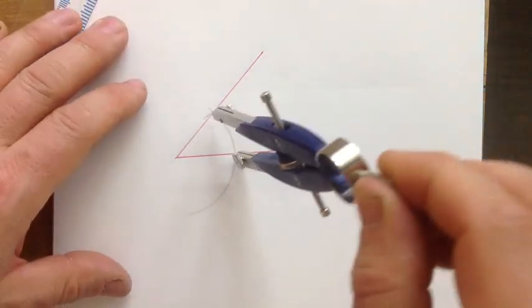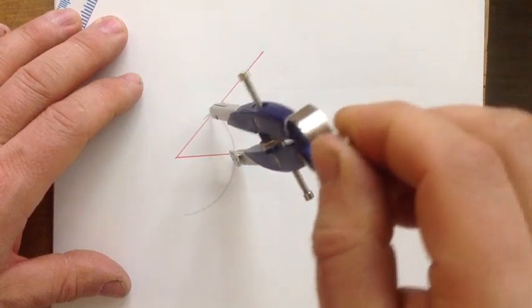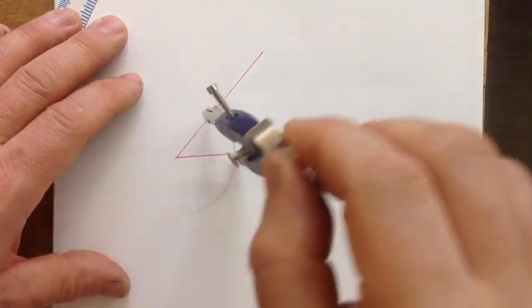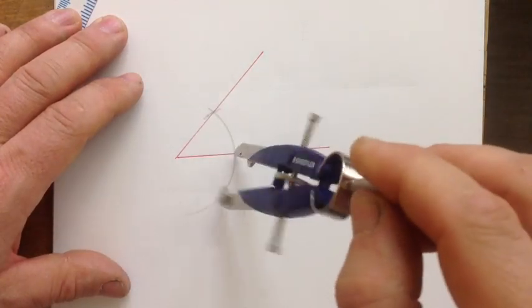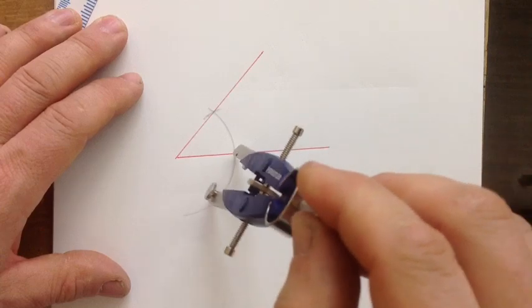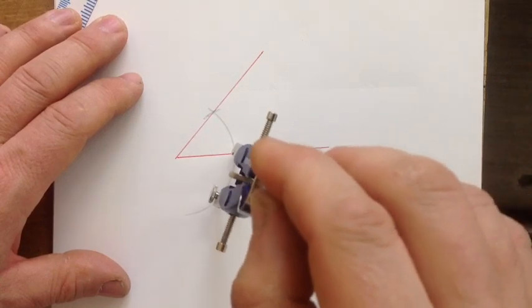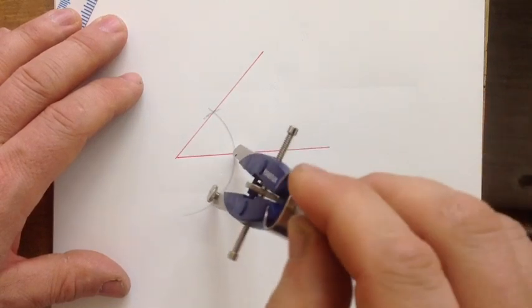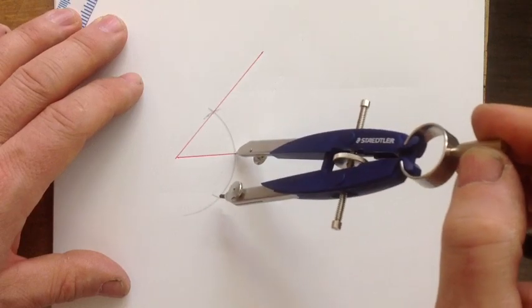Then without lifting the compass point, I rotate my compass all the way around. Without lifting the compass point, I put my pencil back on the arc again down here and make a little mark, and that's it. You've doubled your angle.